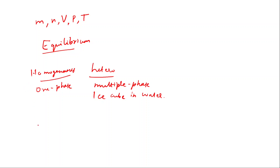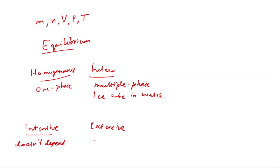Properties of a system can be intensive or extensive. Intensive properties do not depend on the size of the system. Extensive properties do depend on the system size — they scale with the amount of matter present.